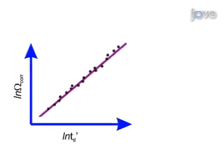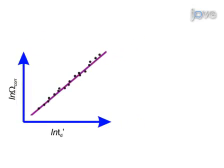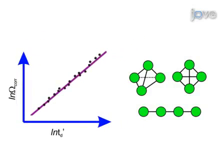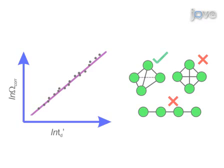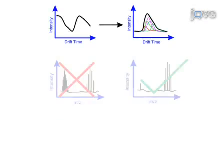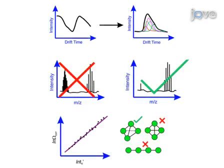Results determine the collision cross-section values of proteins or protein complexes with unknown three-dimensional structures. This information provides clues on their overall shape, subunit packing, and topology.